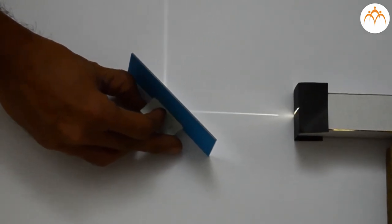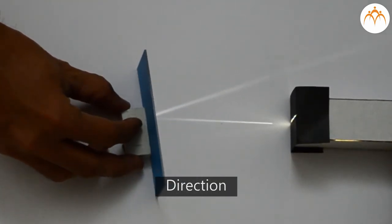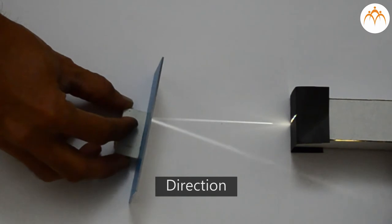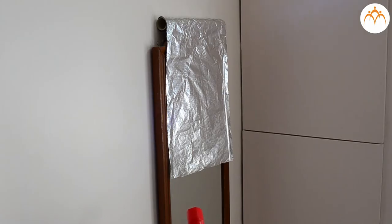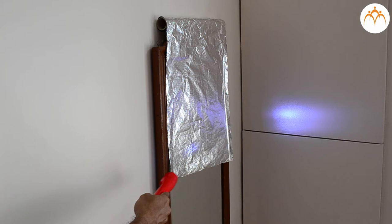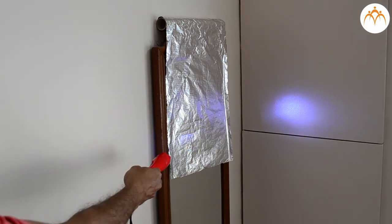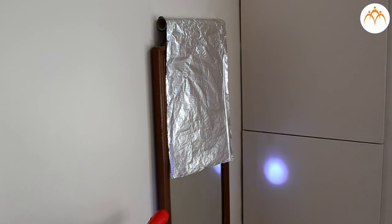Different surfaces cause light to reflect in different ways. When light rays hit a rough surface some of the light is absorbed by the surface. Some light rays bounce off at different angles. This makes the surface appear dull.